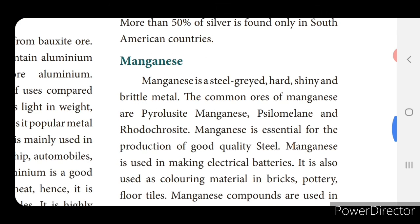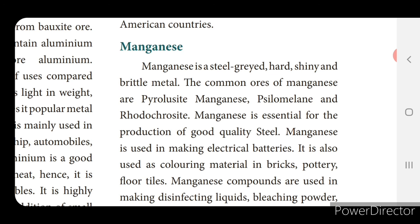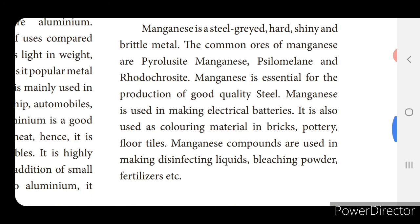The next metal is manganese. These are all non-renewable resources. Manganese is a steel-grey, hard, shiny and brittle metal. The common ores of manganese are pyrolusite, manganite, psilomelane and rhodochrosite. Manganese is essential for the production of good quality steel. It is also used in making electrical batteries, as coloring material in bricks, pottery and floor tiles; manganese compounds are used in making disinfecting liquids, bleaching powder and fertilizers.